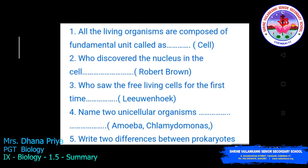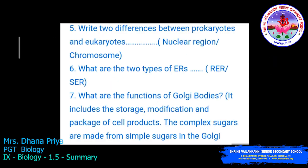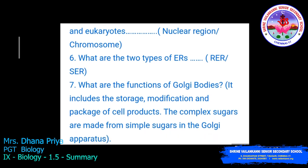Additional questions: All living organisms are composed of a fundamental unit called the cell. Robert Brown discovered the nucleus in the cell. Robert Hooke discovered free-living cells for the first time. Two unicellular organisms are Amoeba and Chlamydomonas. Two differences between prokaryotes and eukaryotes include nuclear region and chromosomes. The two types of endoplasmic reticulum are rough ER and smooth ER. The functions of Golgi bodies include storage, modification, and packaging of cell products, and complex sugars are made from simple sugars in the Golgi apparatus.